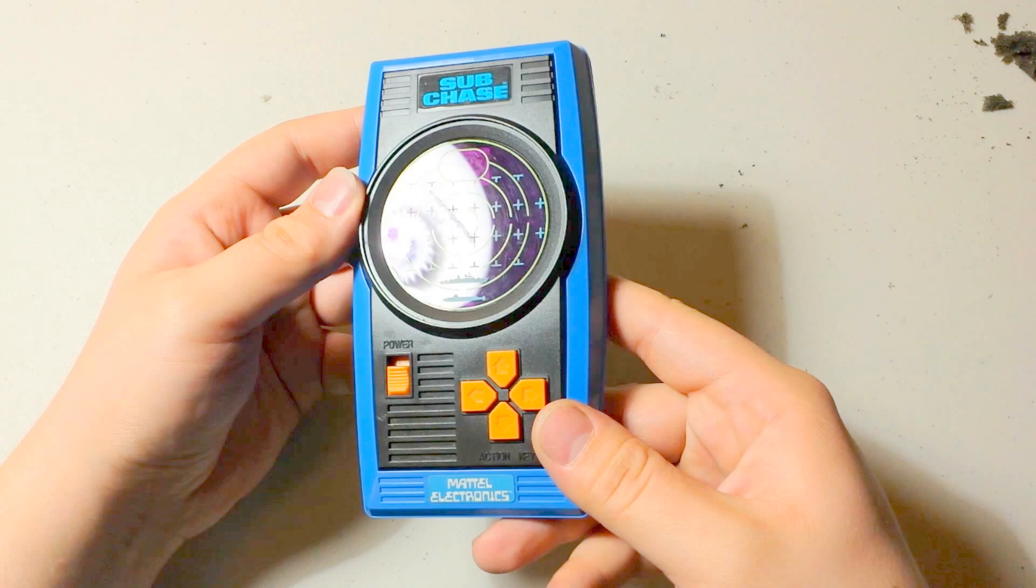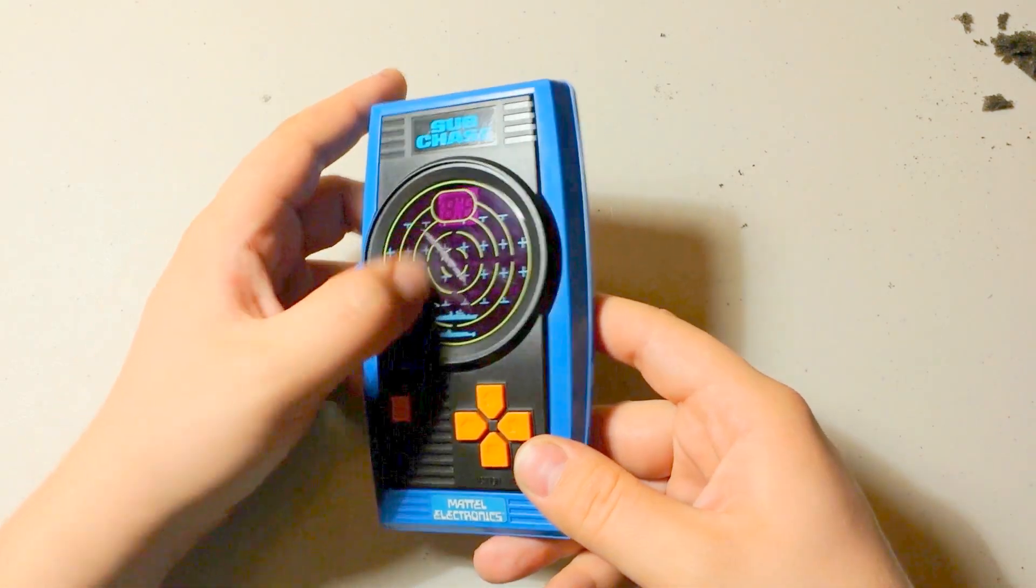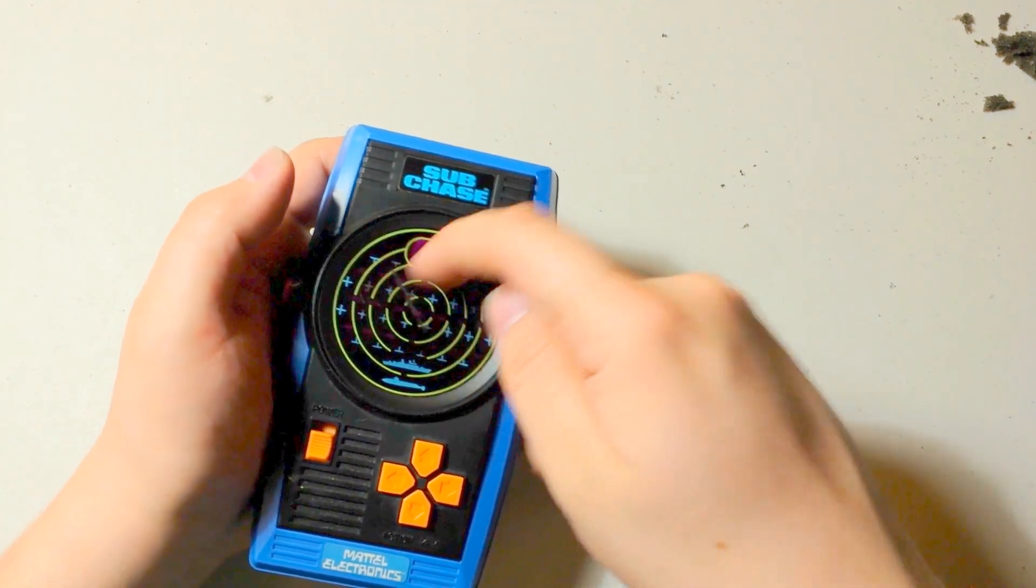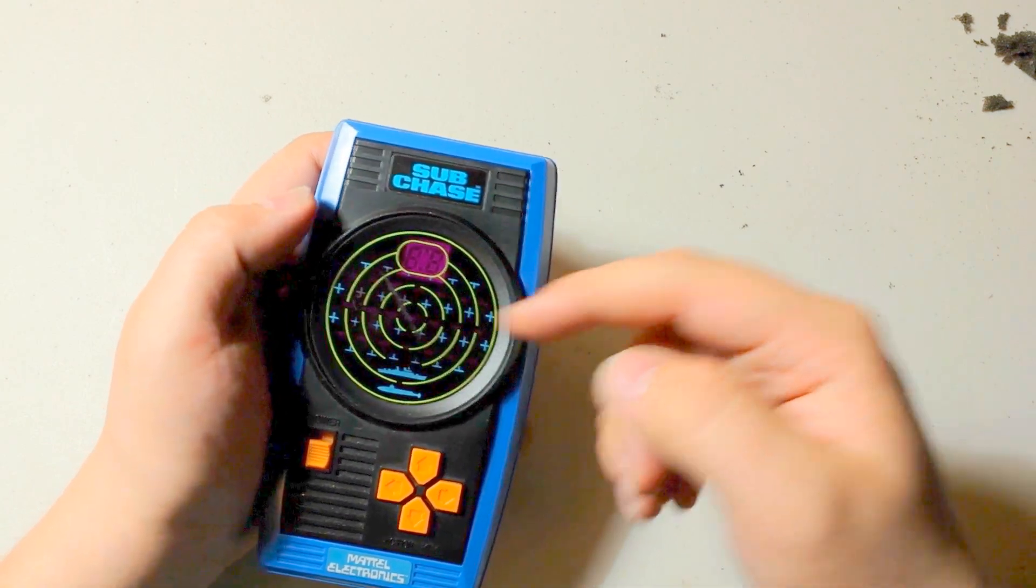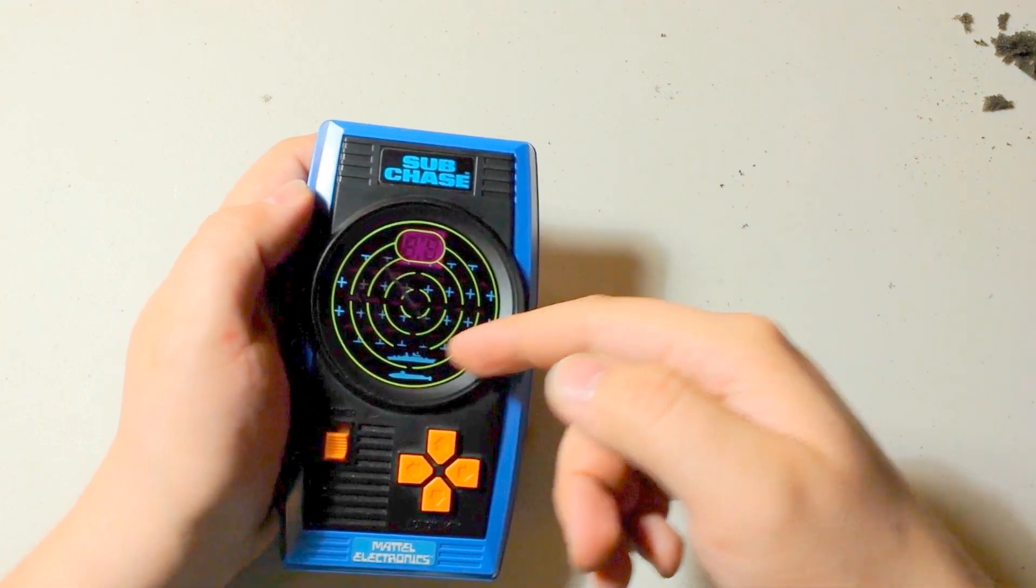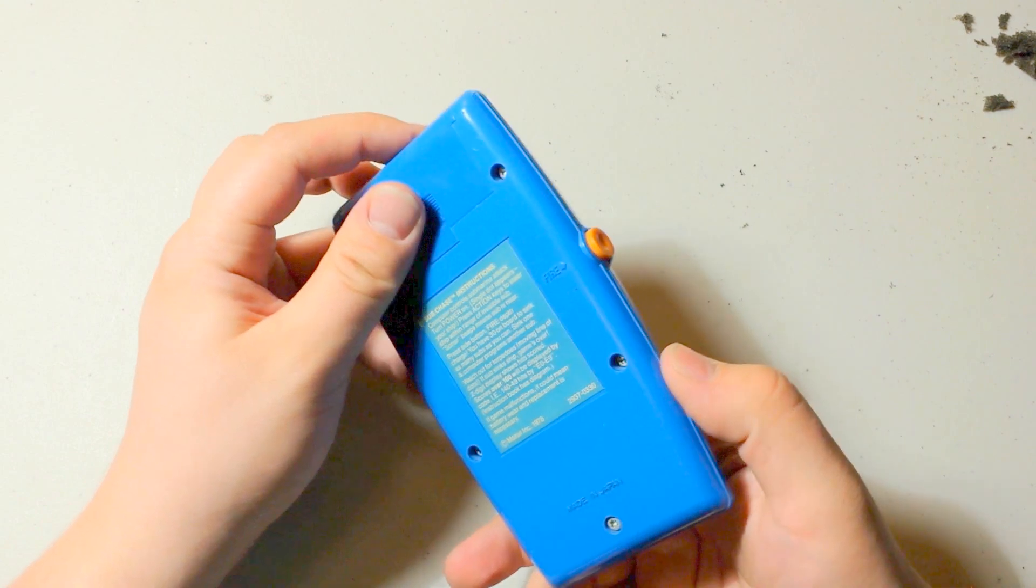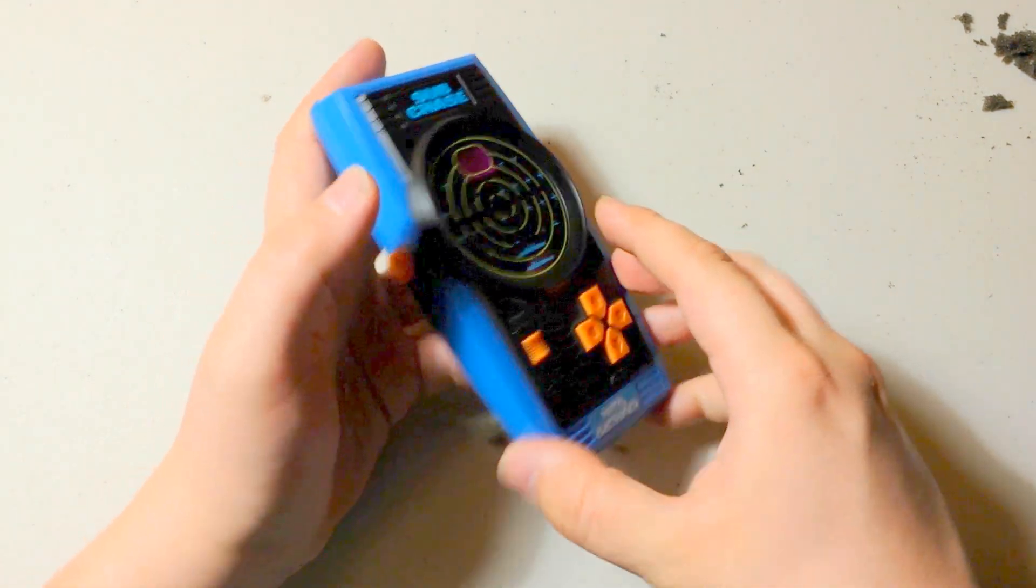As you can see, it's not in the best shape. It's all torn up over here, and it's missing some paint on some of the pluses and half pluses, or whatever you call those things. Sure they have a technical term. You have a fire button, D-pad, power switch.